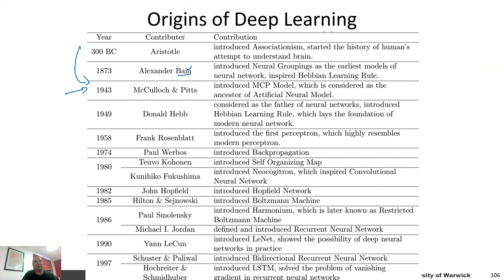This formed the basis of the first neural networks implemented in 1943. There was also a contribution by Bain, who talked about a Hebbian learning rule. Then we had the first implementation of the perceptron, and back propagation was introduced in 1974. There were self-organizing maps, neocognitron, Hopfield networks, Boltzmann machines, recurrent neural networks, and then in 1990 Yann LeCun introduced LeNet, which showed the first possibility of deeper neural networks as a convolutional neural network for classifying digits.